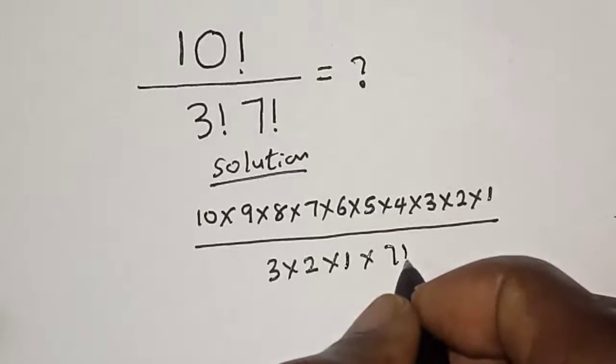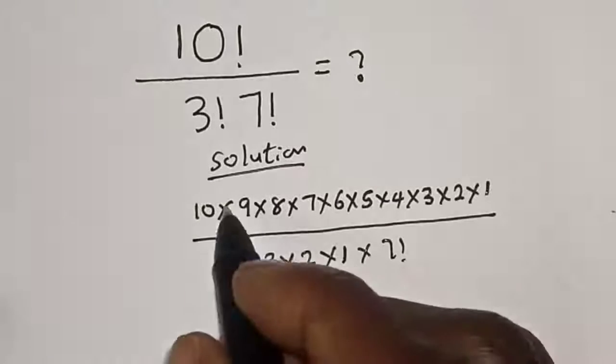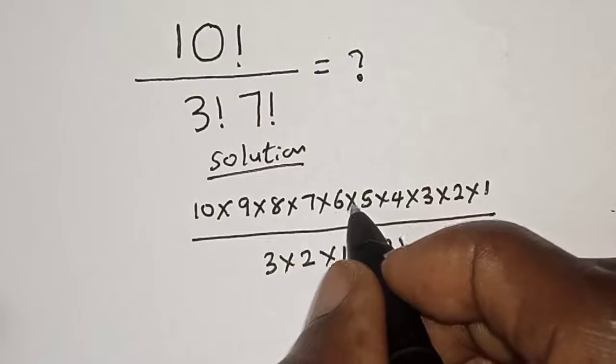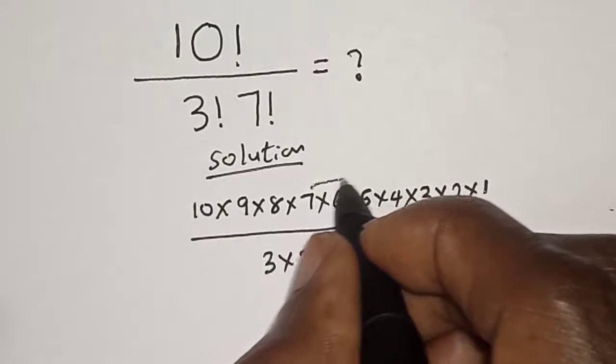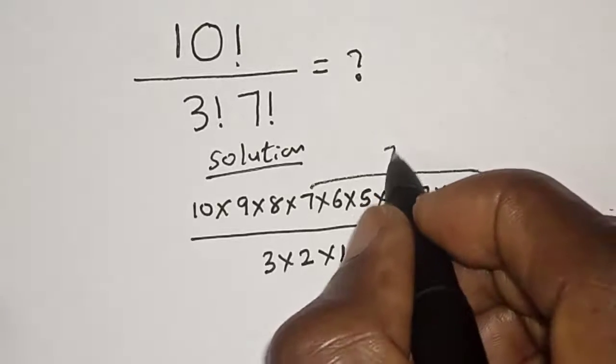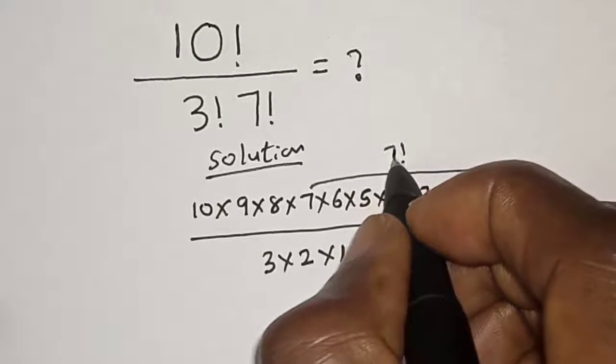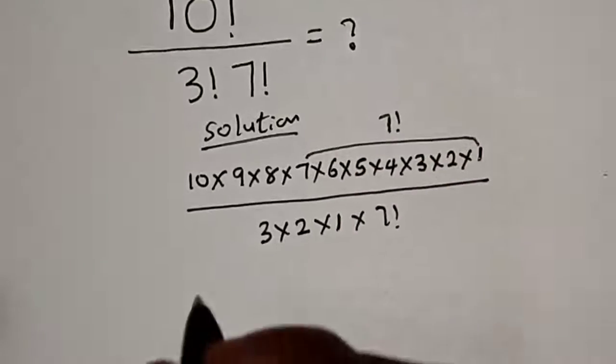Times 7 factorial. Then from here, if you look at this, this is 7 times 6 times 5 times 4 times 3 times 2. From here is 7 factorial.